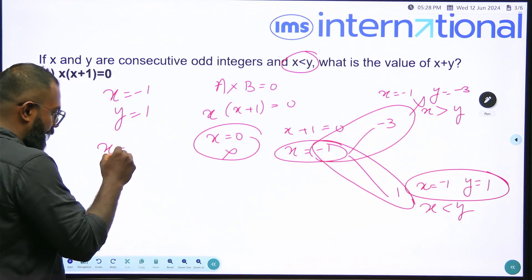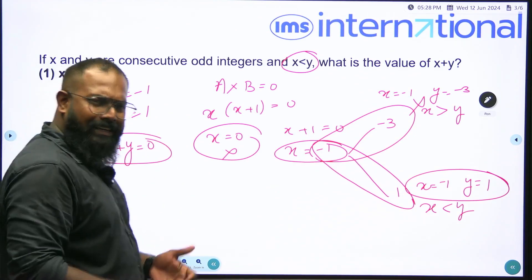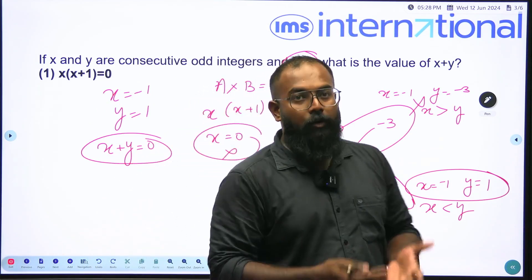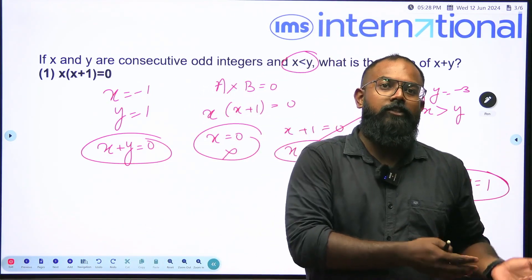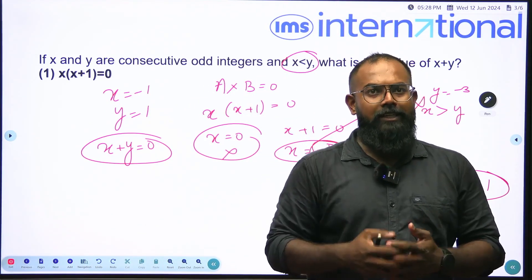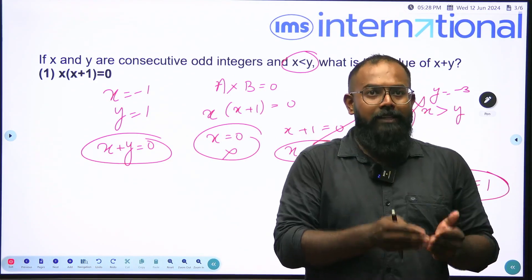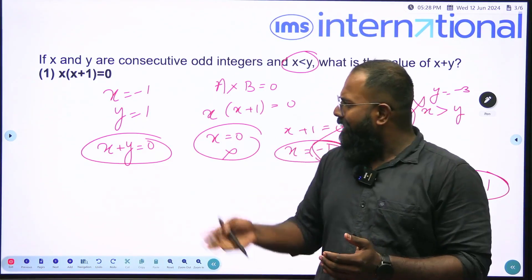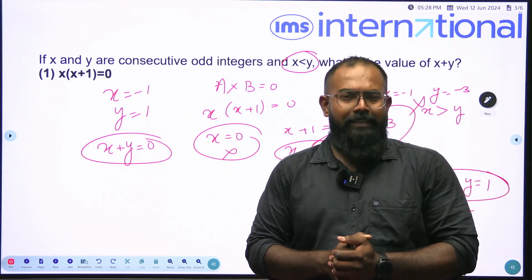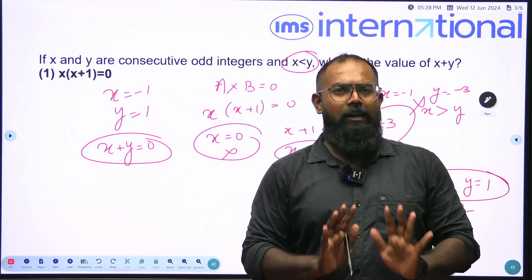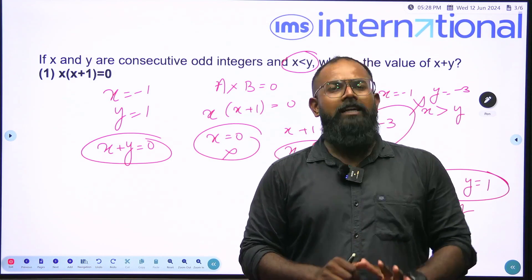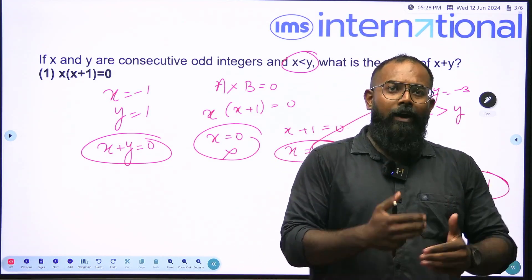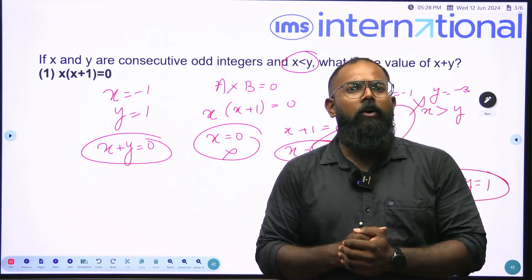Now can we find X plus Y? Yes. X plus Y is 0. But do we need to find X plus Y? No. It was a data sufficiency question in which we just have to discuss whether the statement is sufficient to answer the question. In this case yes, it was sufficient to answer the question. That means statement 1 alone is sufficient to answer the question.